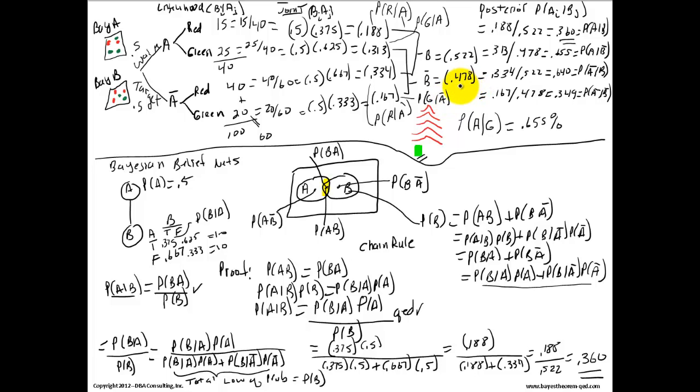Now to compute our posterior probabilities, A sub I given B sub J. We take the joint probabilities, 0.188 divided by what we call the marginal. These are marginal probabilities. We just compute these. So 0.188 divided by 0.522. 0.188 comes from here, 0.522 is the marginal B, and we get 0.360. That equals the probability of A given B.